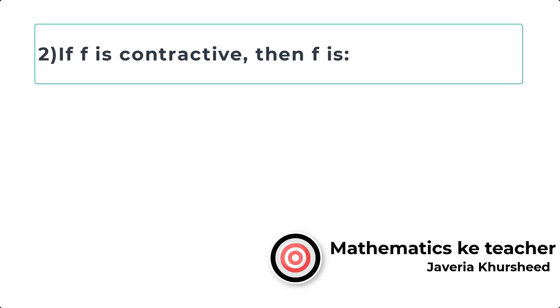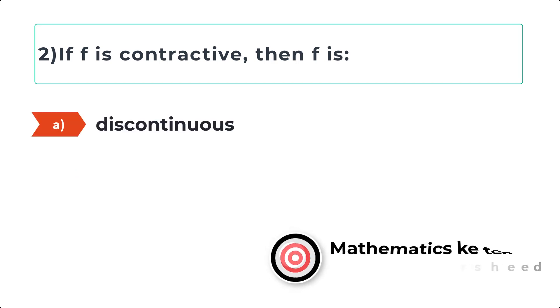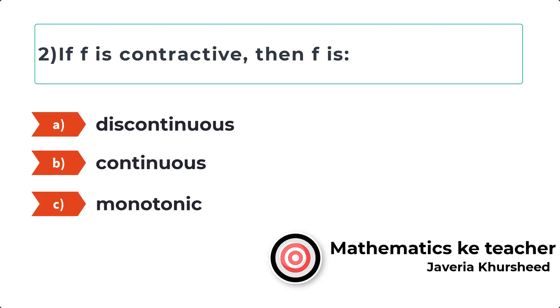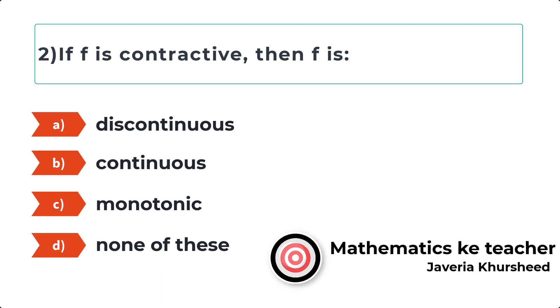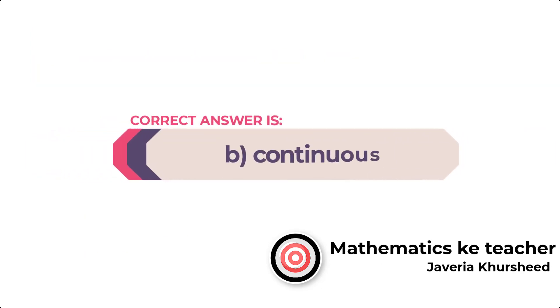Question 2: If f is contractive, then f is: A) Discontinuous, B) Continuous, C) Monotonic, D) None of these. Correct answer is B, continuous.